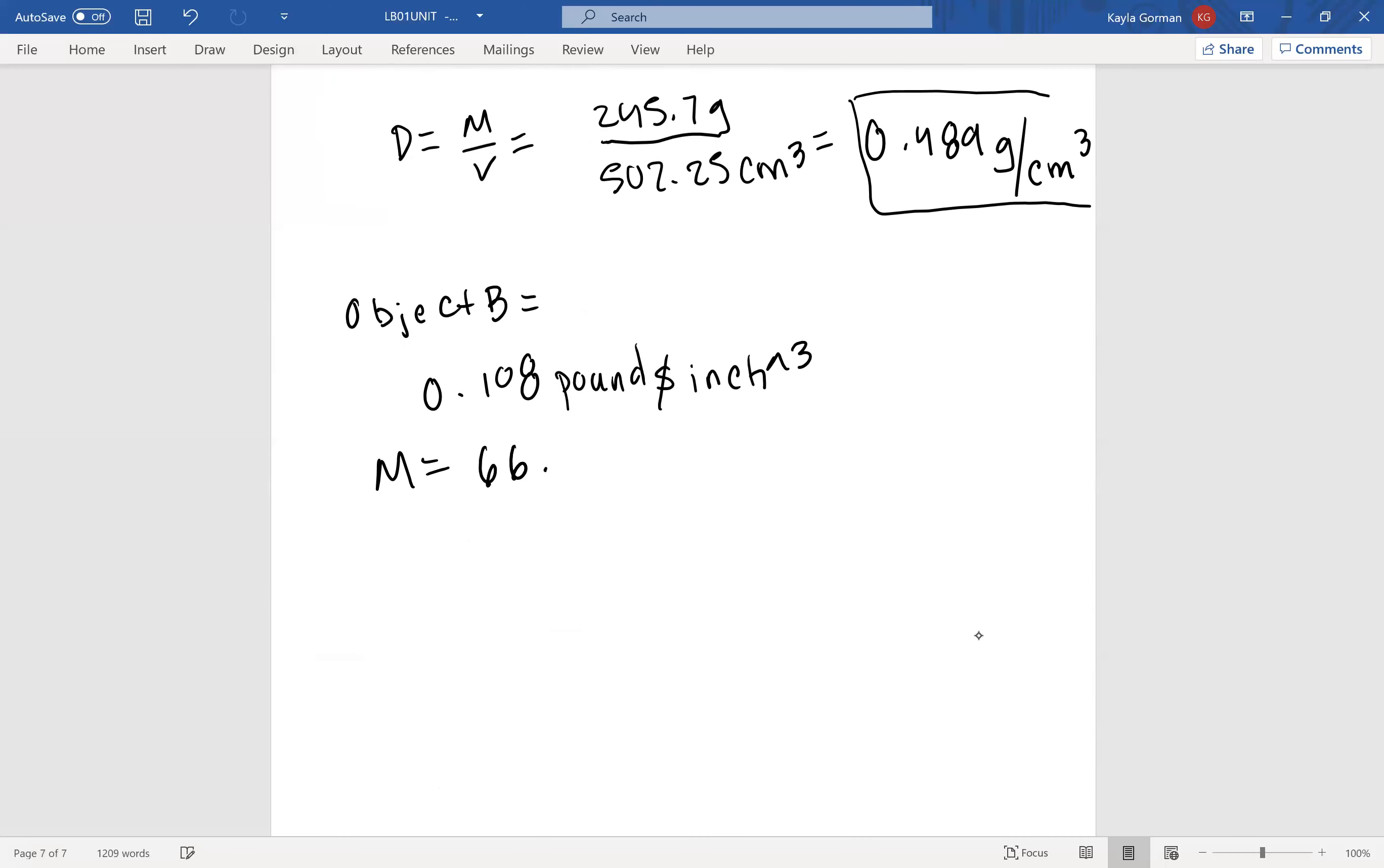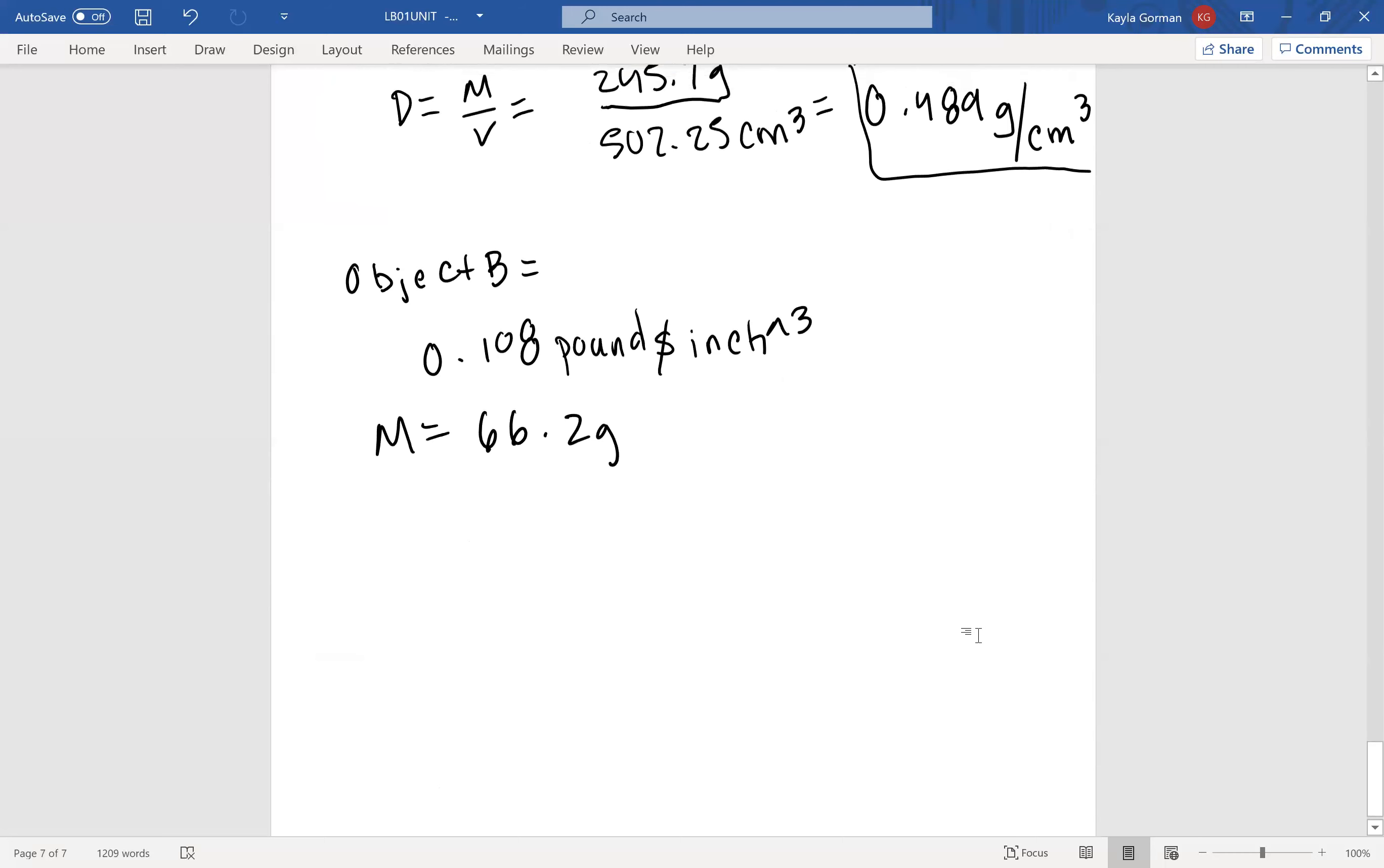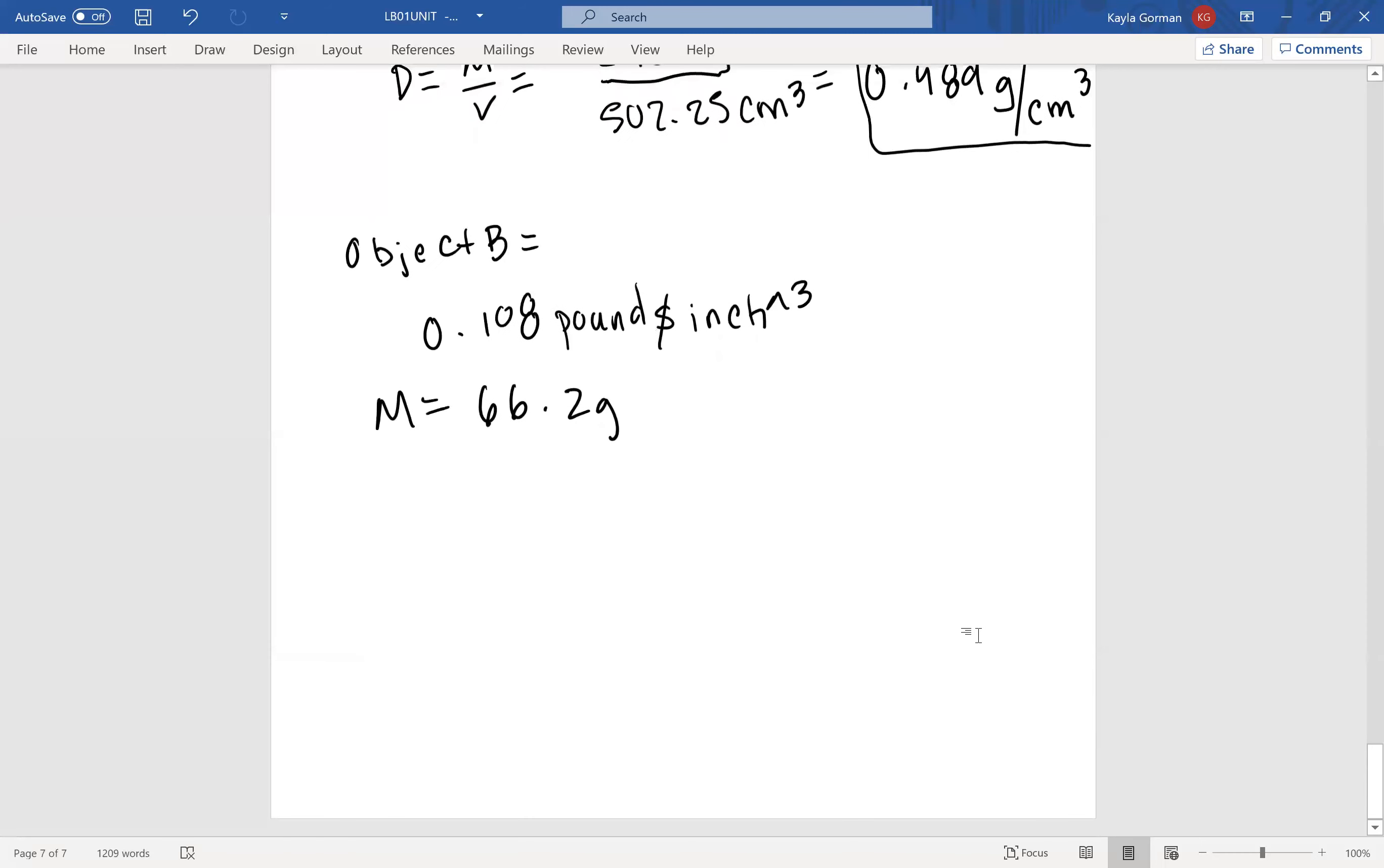Sweet, now we just need to find the volume in centimeters cubed. So remember the volume for B was a little bit different and the volume formula was pi times radius squared times the height. So let's do that, 3.14. Remember when I gave you these numbers I gave you the centimeter values so you can convert the centimeter values to the values you need for the earlier questions. Now for number 18 I want you to use those centimeter values.